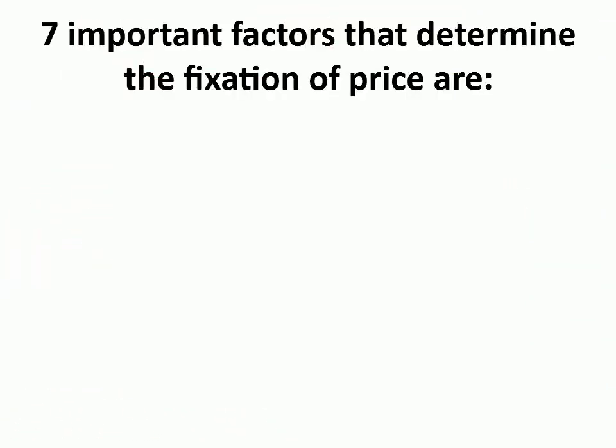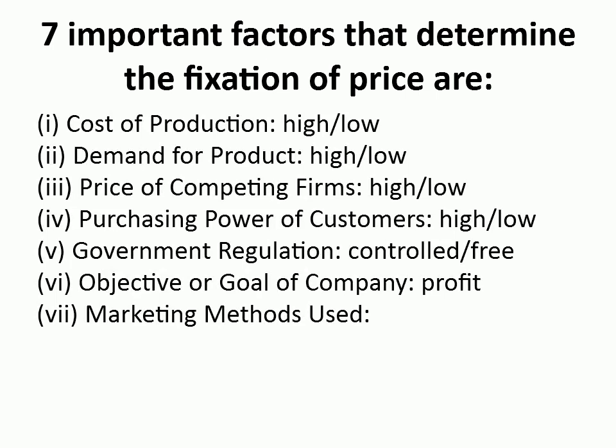Seven important factors that determine the fixation of price are: one, cost of production, high or low; two, demand for product, high or low; three, price of competing firms, high or low; four, purchasing power of customers, high or low; five, government regulation, controlled or free; six, objective or goal of company, profit; seven, marketing methods used.